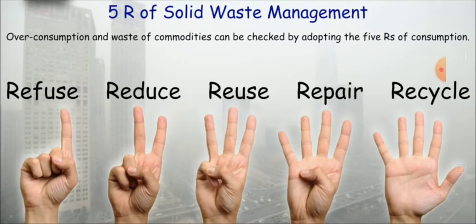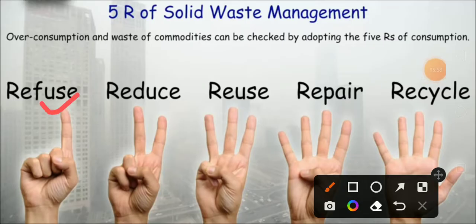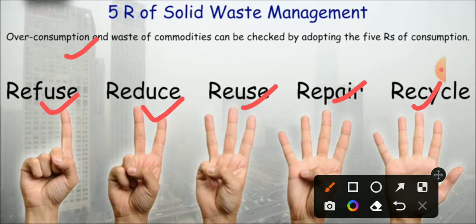The five R's of solid waste management are: Refuse, Reduce, Reuse, Repair, and Recycle. Over-consumption and waste of commodities can be checked by adopting these five R's. Solid waste can be refused, reduced, reused, repaired, and recycled.